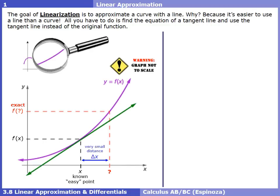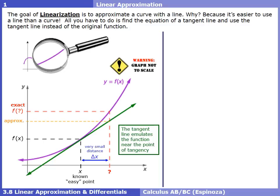What we can do is write a tangent line at the known easy point x. We can definitely write a tangent line equation there. The tangent line emulates or behaves like the function near the point of tangency. If we evaluate the tangent line at the question mark, that won't give us the exact value, but we can call it an approximation. The exact value is what we'd really want, but the approximation is pretty close. Using this idea, we can approximate functions without ever actually evaluating the function — we just write a tangent line and evaluate that instead.